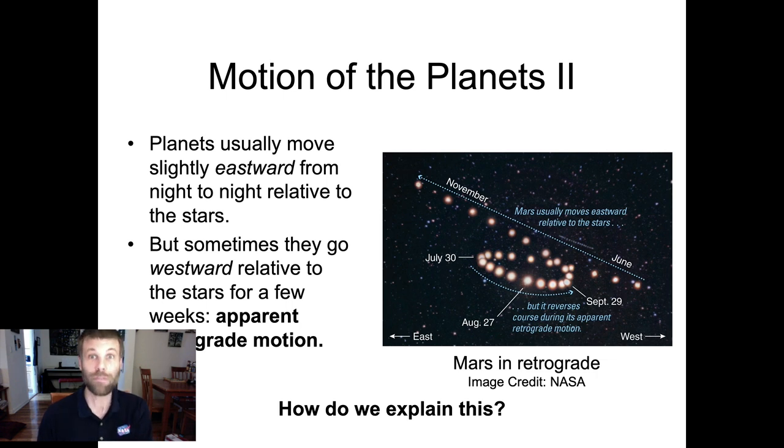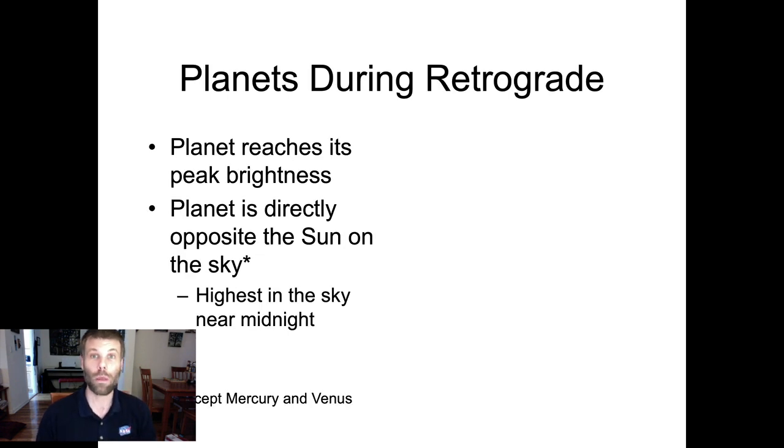How can we explain this behavior? In order to really understand this, we need first to think about some things that we can observe to be true about planets when they're undergoing apparent retrograde motion, or retrograde for short.